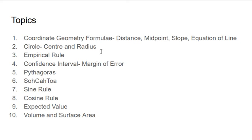The confidence interval topic includes margin of error, which is quite simple — it's just one over root n. Often one part of the question will just be figuring out what that is. Topics five through eight are all trigonometry: Pythagoras and SOHCAHTOA for right-angle triangles, and sine rule and cosine rule for non-right-angle triangles. Trigonometry is a big part of this paper.